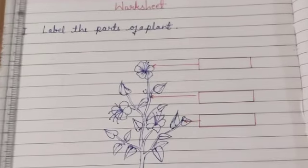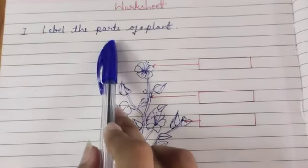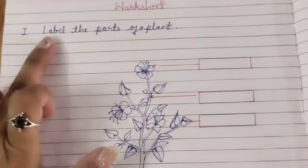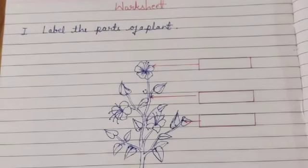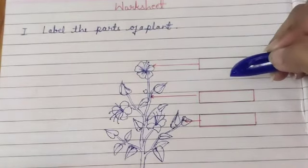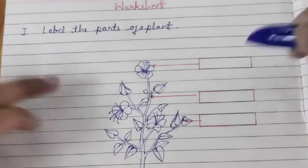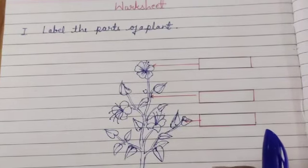So here the question is, label the parts of a plant. What is labeling? Label means to give it a name, what we call that thing. Labeling means to label it, name it.